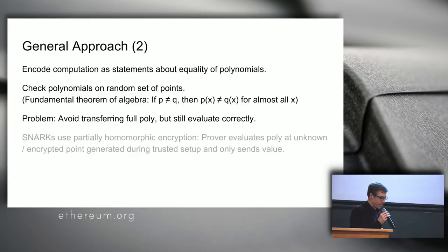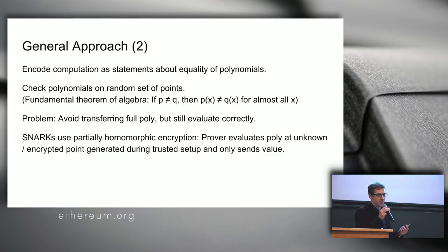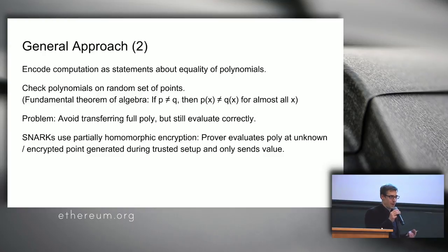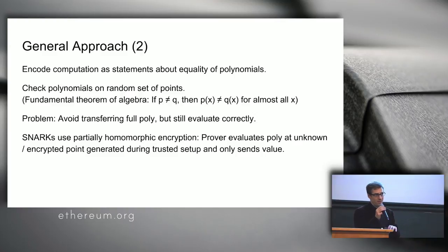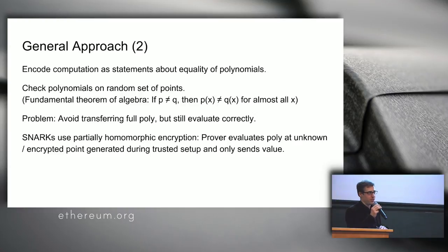The verifier wants to check that two polynomials the prover claims are equal, but she has to ask the prover to evaluate the polynomial and then check that the numbers are equal. SNARKs use partially homomorphic encryption for this: the prover evaluates the polynomial at an encrypted point, where this encrypted point is generated during the trusted setup. Some randomness that is later destroyed is used to create a random but secret point where the polynomials will be evaluated. Since it's homomorphic encryption, if the values at the encrypted points differ, the decrypted versions also differ, so you can discard the randomness.